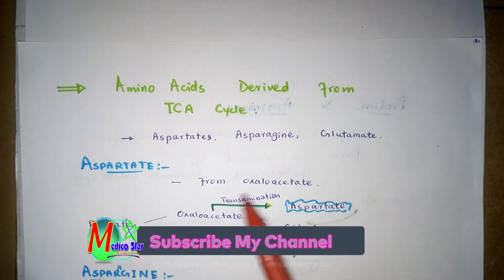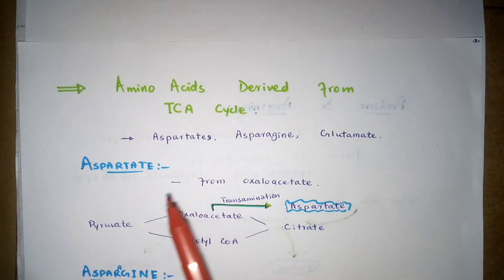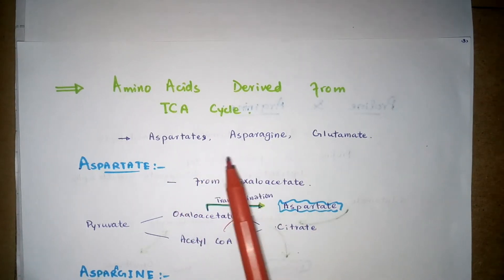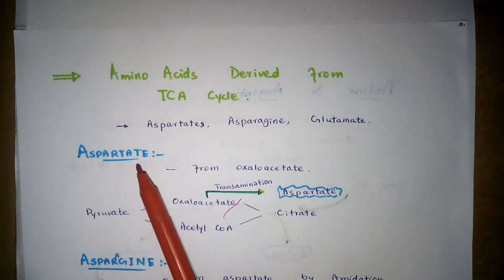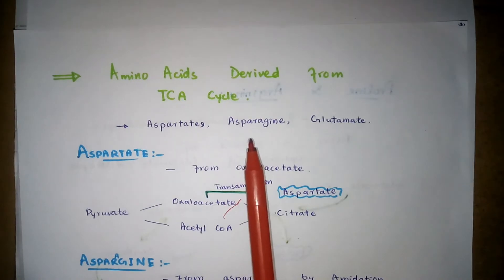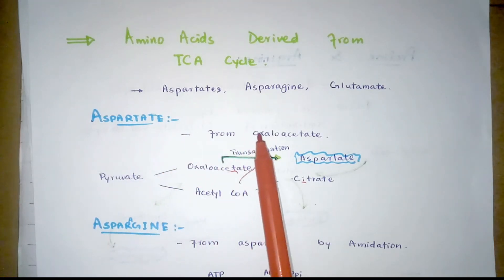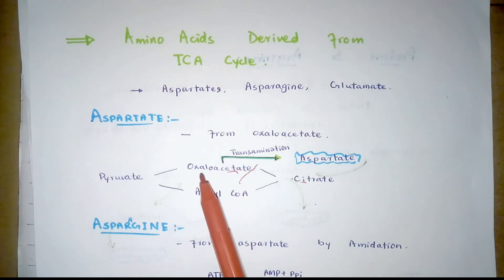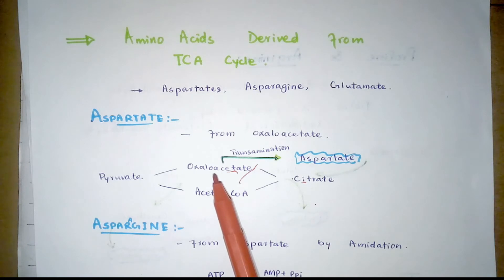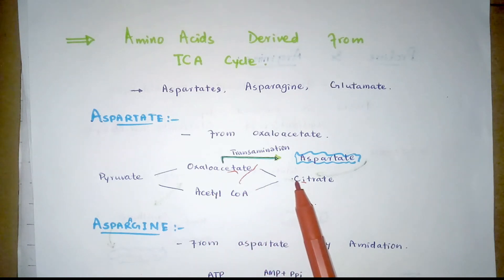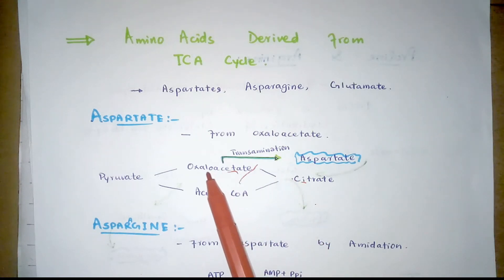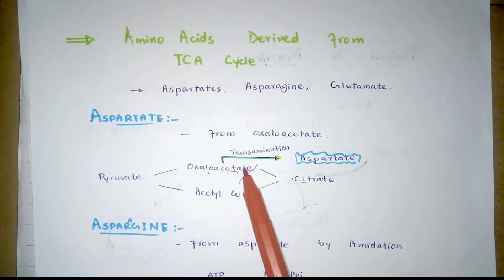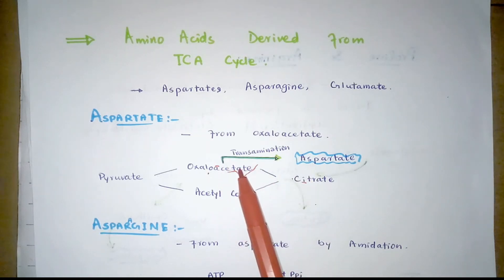Now, the amino acids derived from the TCA cycle (citric acid cycle). Certain amino acids can also be derived from citric acid cycle intermediates. These include aspartate, asparagine, and glutamate. Aspartate can be derived from oxaloacetate by a transamination reaction, catalyzed by aminotransferase. Oxaloacetate, the TCA cycle intermediate that combines with acetyl-CoA to run the TCA cycle, acts as the precursor molecule for the formation of aspartate.